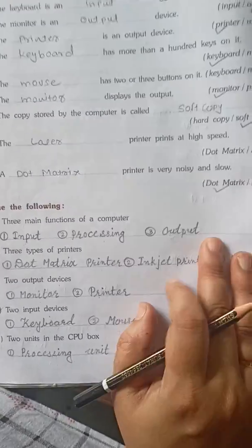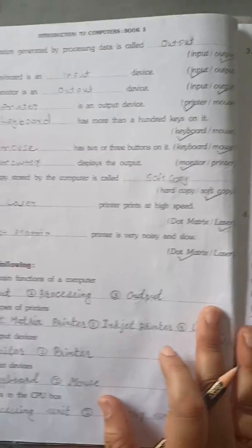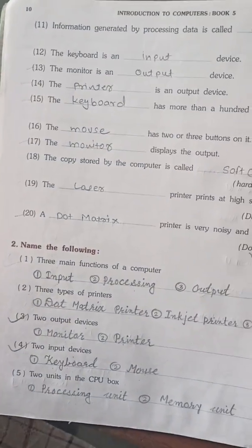So these are our 20 blanks and name the following. You have to write this in your computer book one time. So today only till here. In the next lecture I will give you the second exercise. Allah Hafiz.